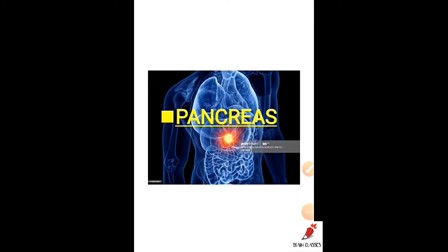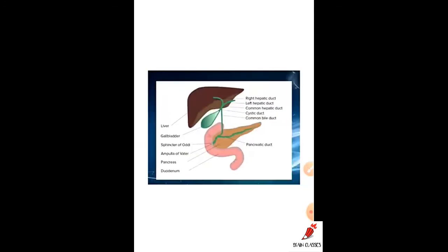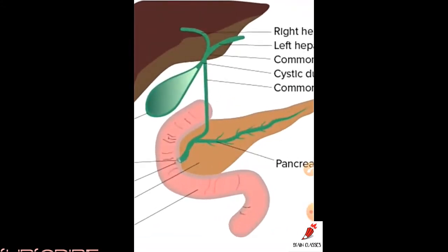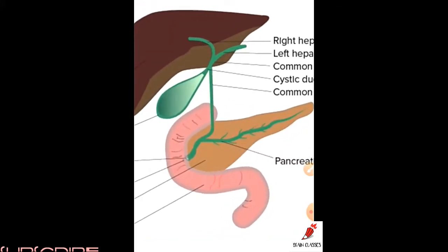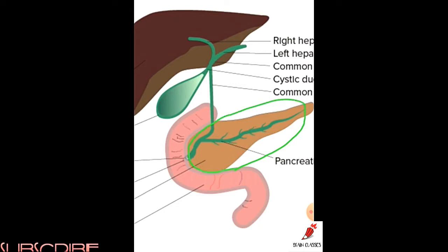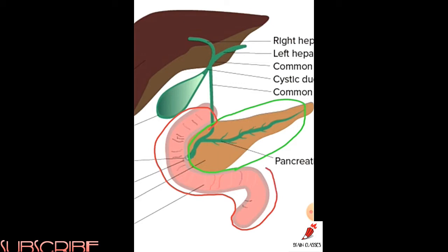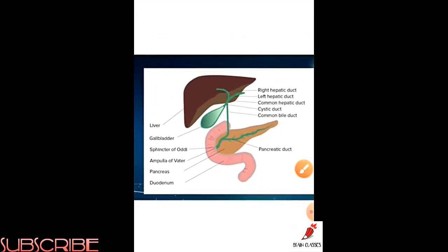Welcome to Brain Classes. Today we are going to discuss about the pancreas. The pancreas is an elongated organ which is present in the C-shape arrangement of the duodenum. The pancreas has a head, body, and tail.